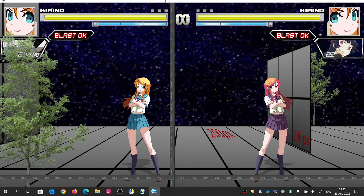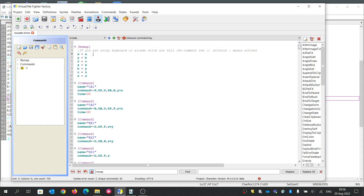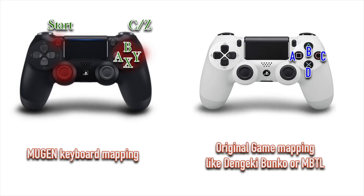By the way, you can not only change this key mapping to suit your keyboard — you can also change the mapping to match your gamepad settings. For example, here is a typical Mugen keyboard mapping on the left side, and a force-map to a PS4 game controller on the right, where A, B, C and X, Y, Z map to the buttons on the game controller.